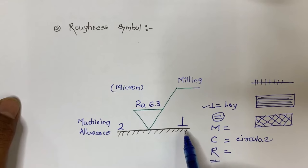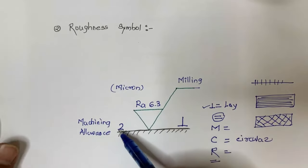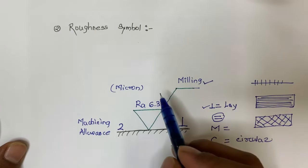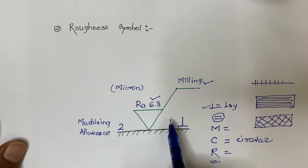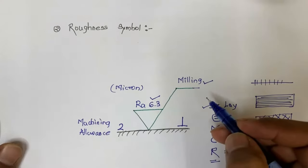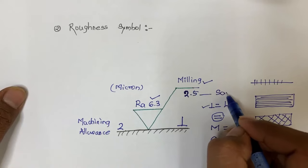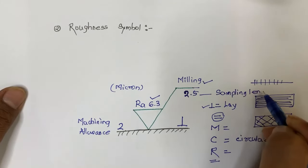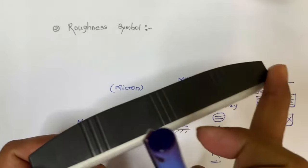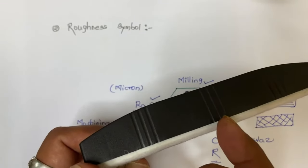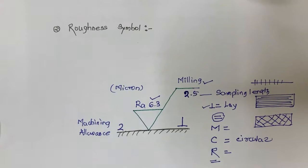In this way, the operator can identify different surface properties with the help of this symbol. The symbol placed on the surface tells the operator which production process needs to be used, what RA value needs to be achieved, what the machining allowance is, and what the lay direction is. One more parameter is also given: a numerical value such as 2.5 indicating the sampling length. We have already discussed sampling length — it refers to the length over which surface values are checked.